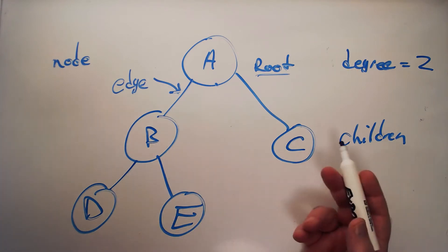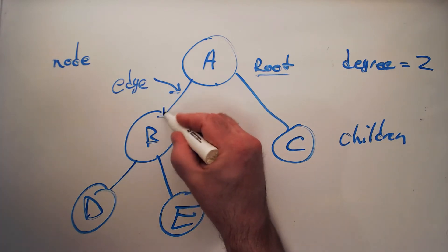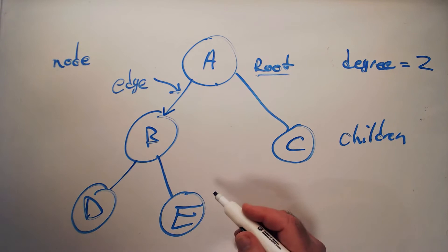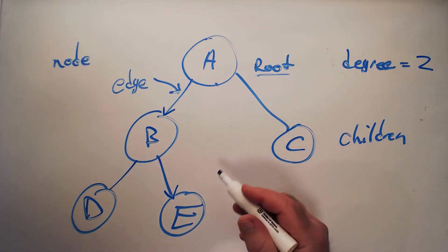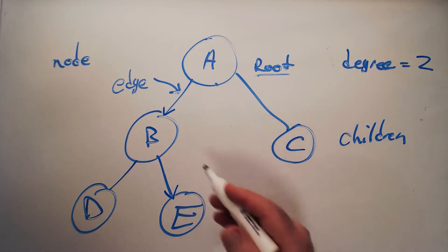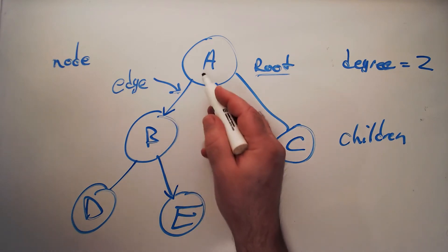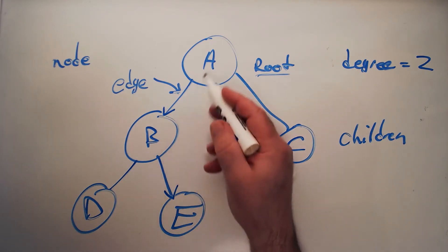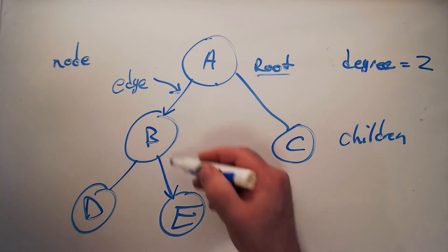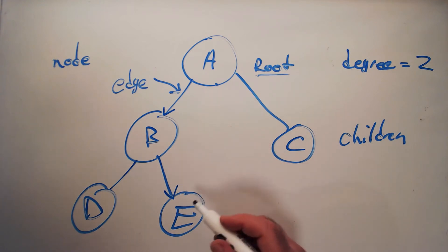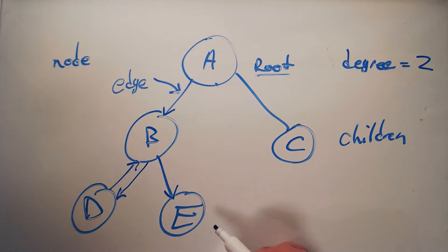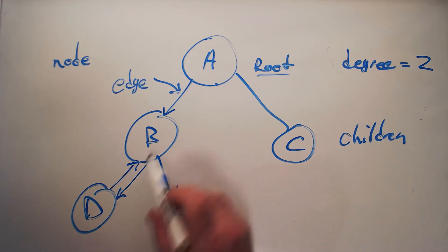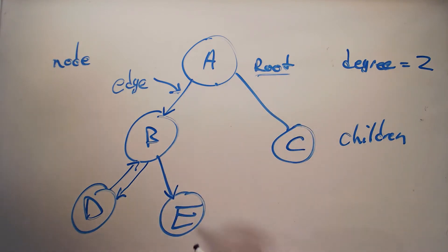Edges can be undirected, as drawn here, or they can be directed — meaning they have an arrow, a direction, just like linked lists have a direction. A link flows from A to B; A points at B. They can also be directed the other way. You can even build trees with links going both ways — just like a doubly linked list, you can have a doubly linked tree.